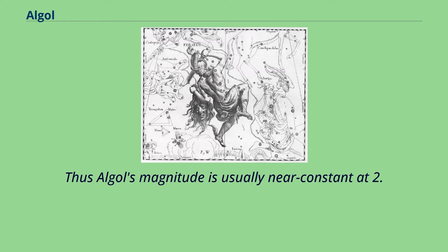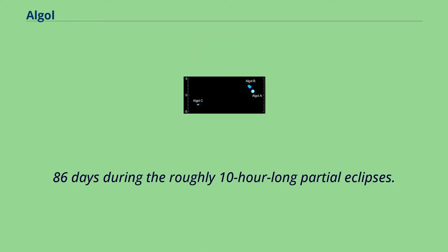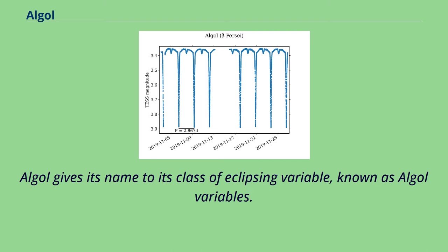Thus Algol's magnitude is usually near constant at 2.1 but regularly dips to 3.4 every 2.86 days during the roughly 10-hour long partial eclipses. The secondary eclipse when the brighter primary star occults the fainter secondary is very shallow and can only be detected photoelectrically. Algol gives its name to its class of eclipsing variable, known as Algol variables.